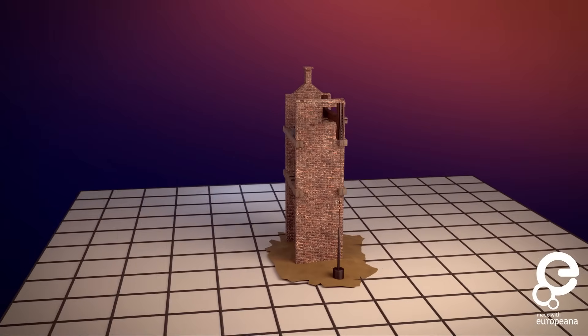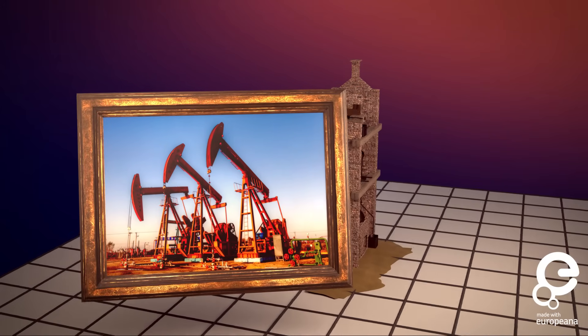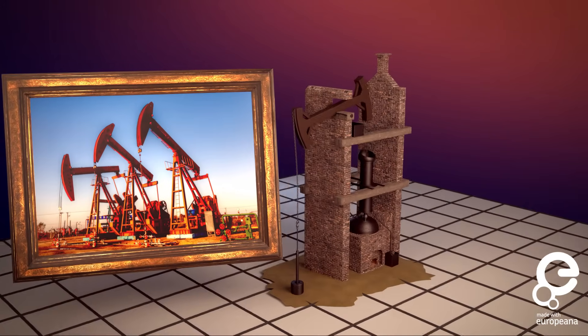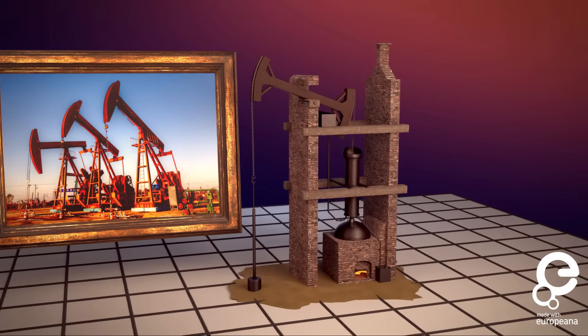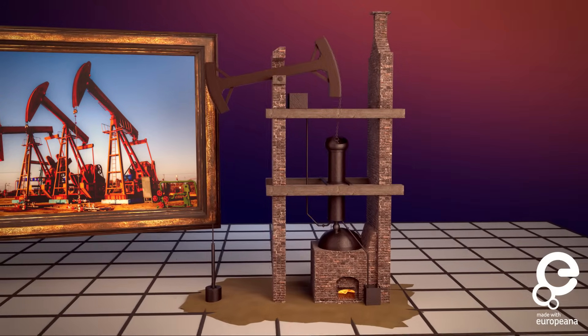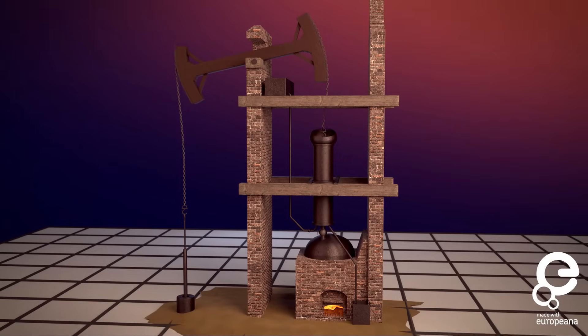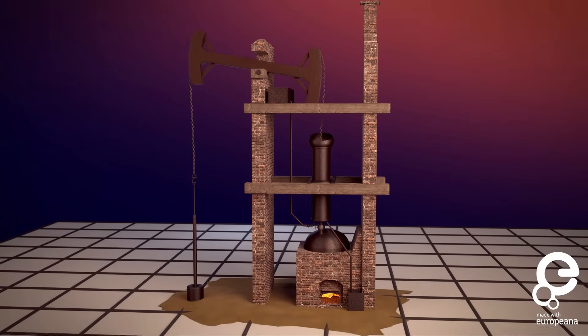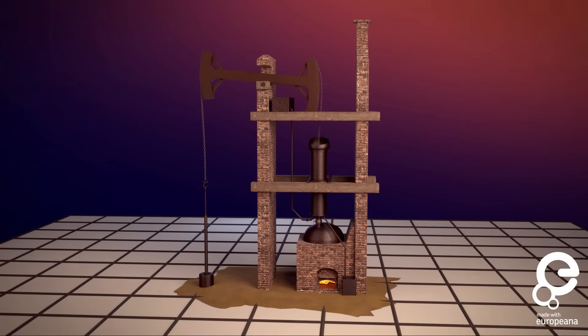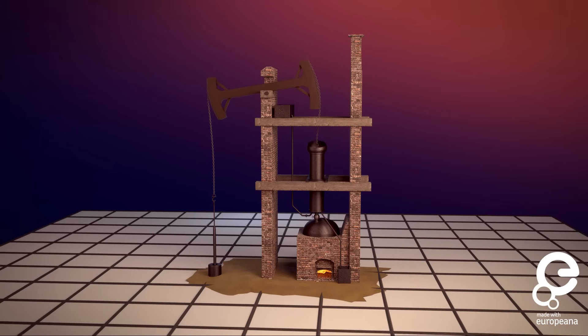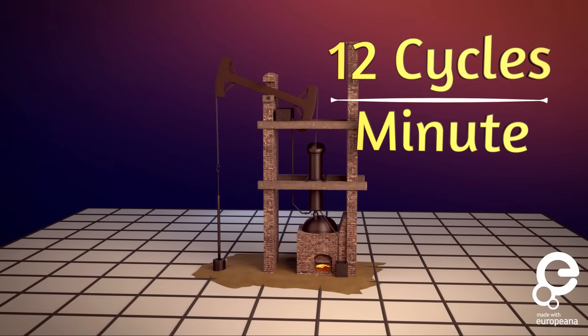The Newcomen steam engine resembles an oil derrick, and that's because it has a similar function. Oil derricks pump oil up from the ground, and the Newcomen steam engine was used to pump water out of mines. Let's see this engine in action. It seems slow, doesn't it? But this was the first engine of its kind, so moving at a speed of 12 cycles a minute was rather fast.